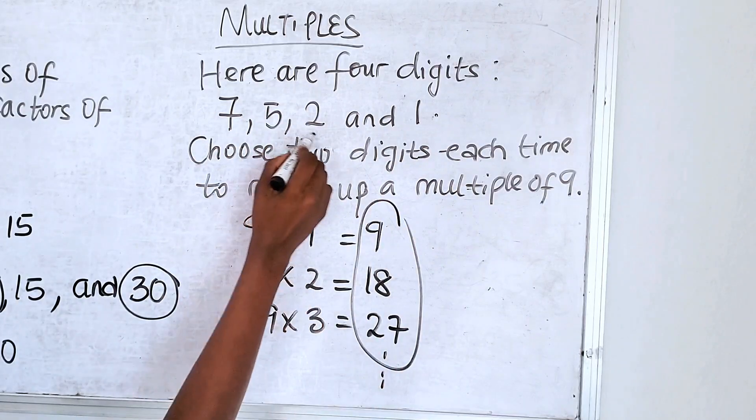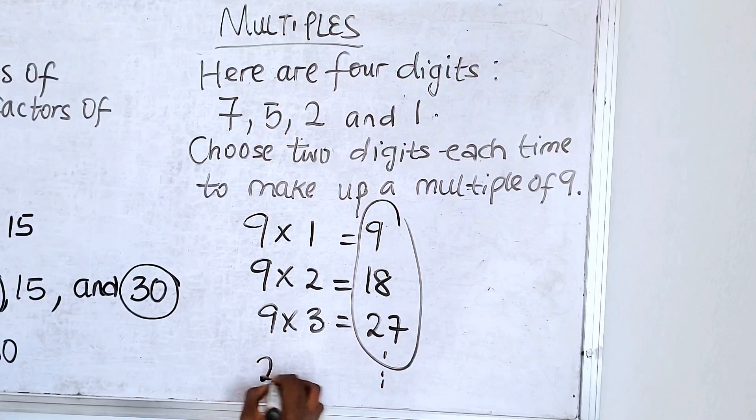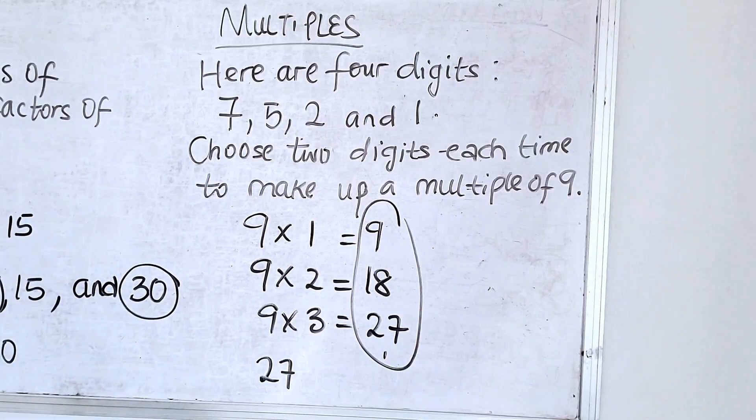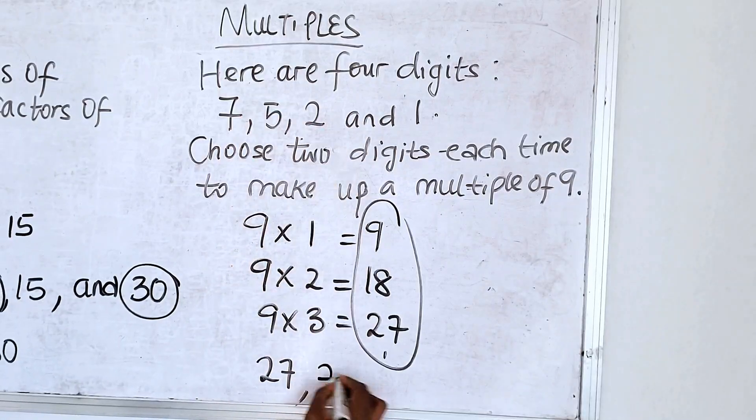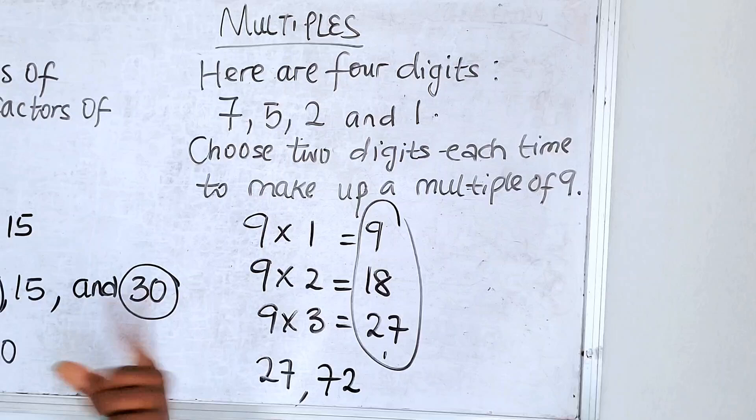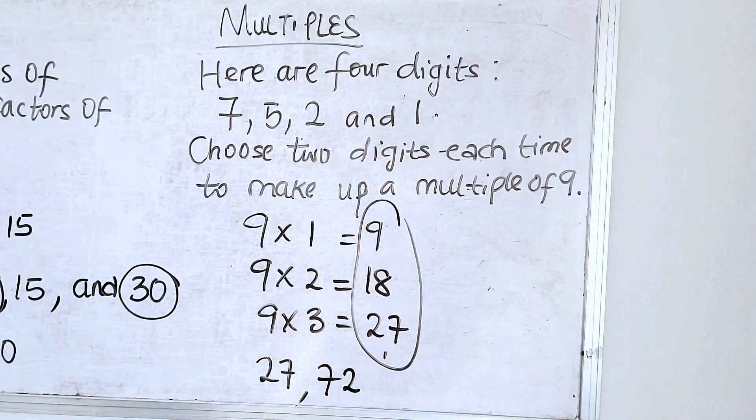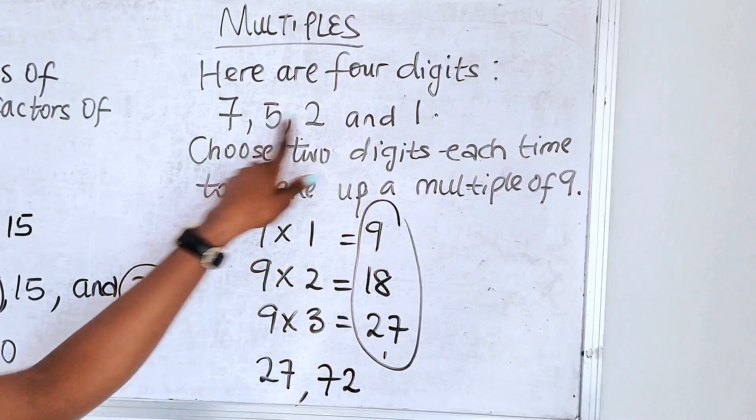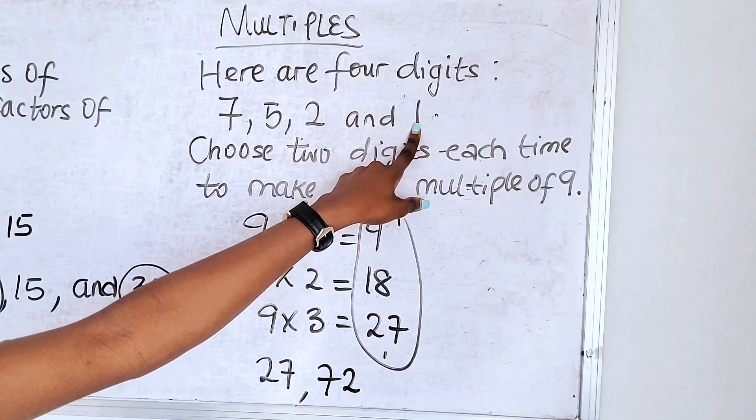So from here we can already see we have 2 and 7. 27. We also have 72. So 2 digits you can add together to give 9 are always multiples of 9. So you have 27 to be a multiple of 9. You have 72 to also be a multiple of 9.